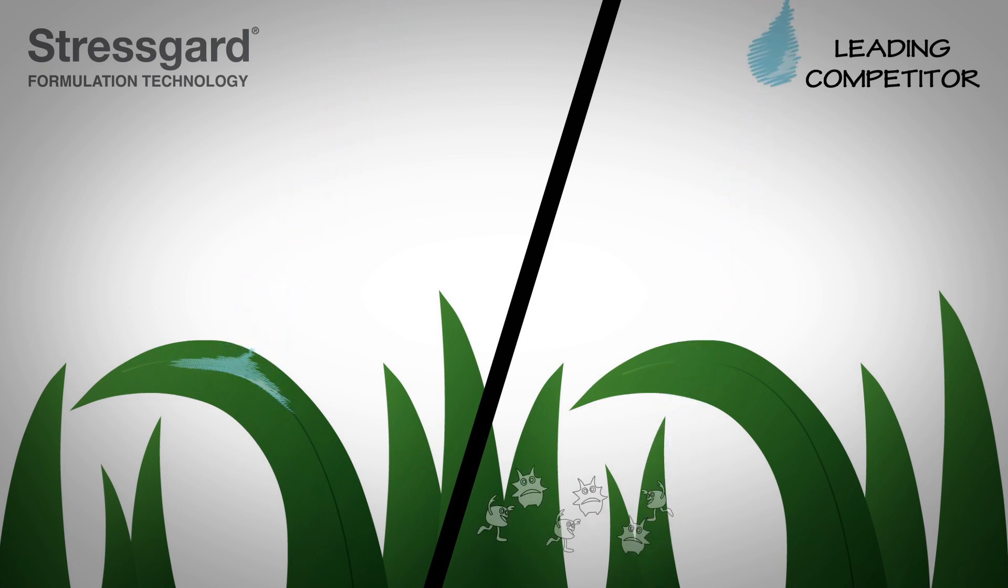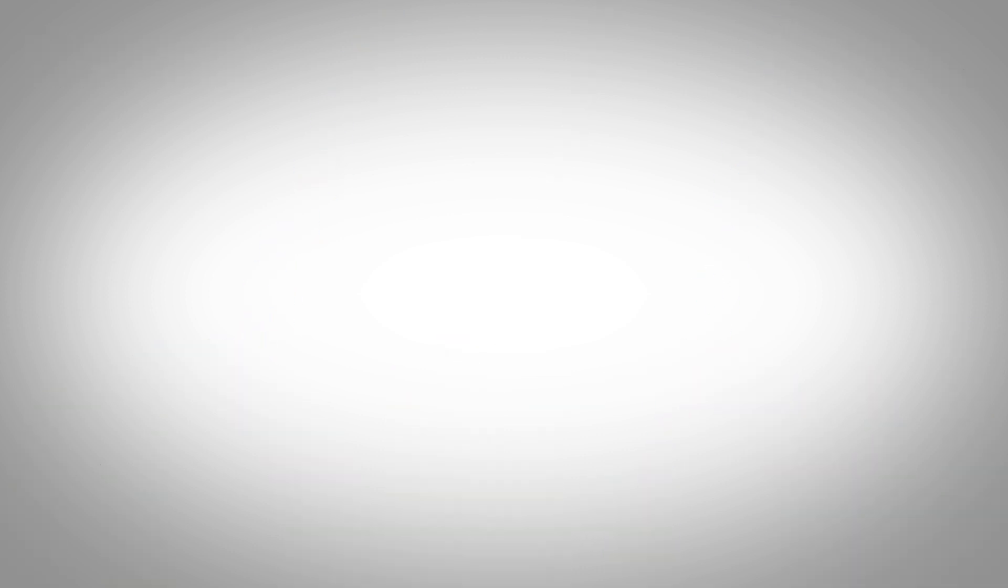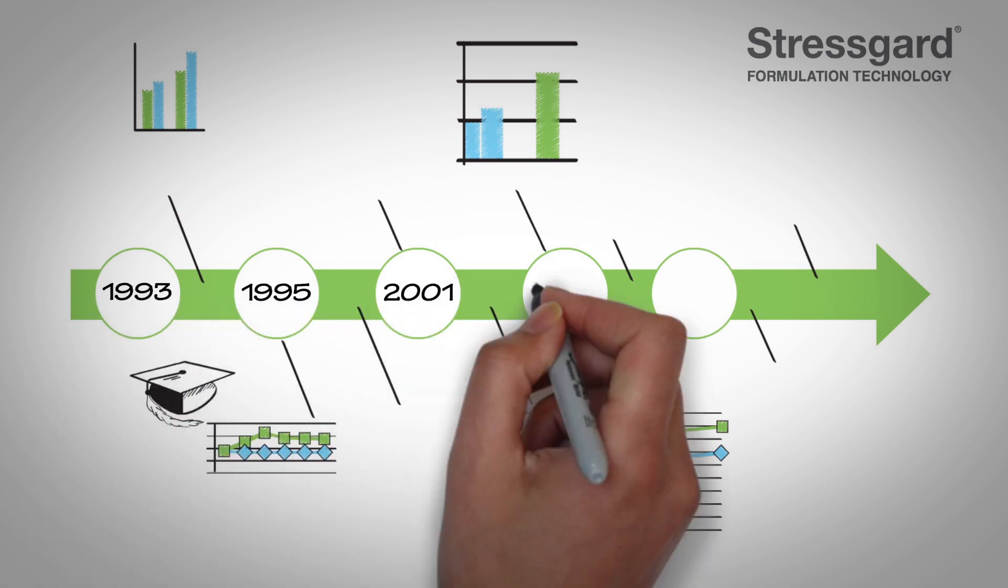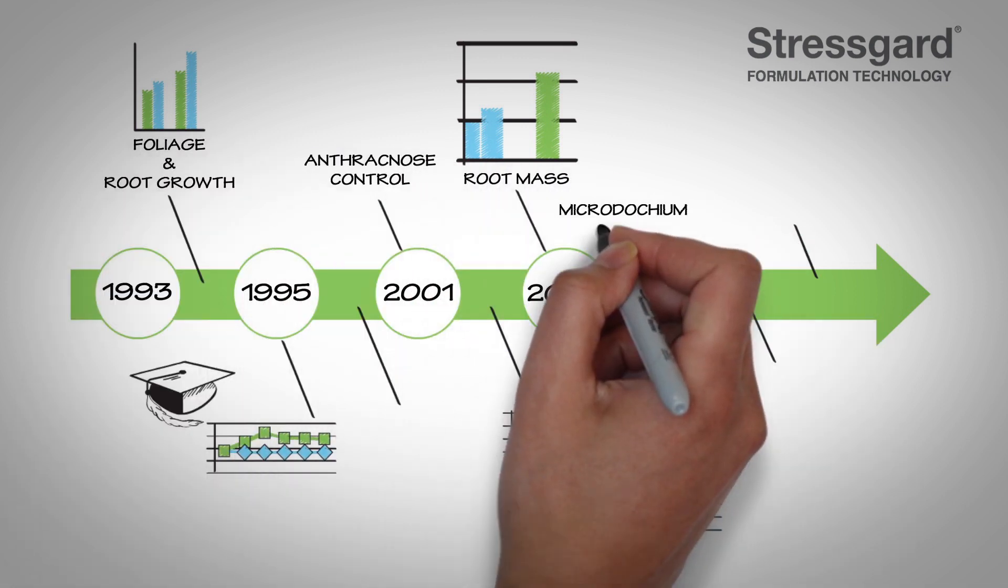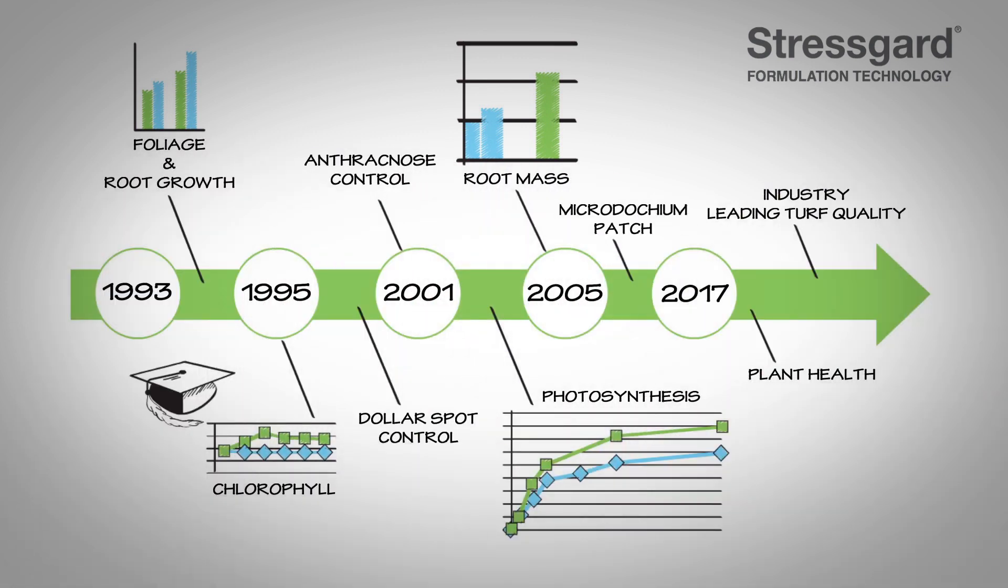Exteria StressGard from Bayer also contains our leaf coat technology, which enables Exteria StressGard to adhere to the plant up to 10 times more than leading competitors. Exteria StressGard technology allows you to demand more for your turf and more from your fungicides.